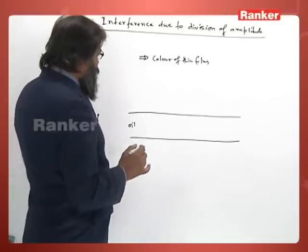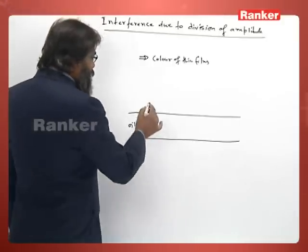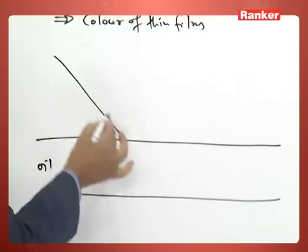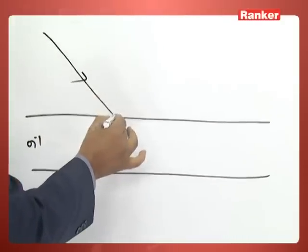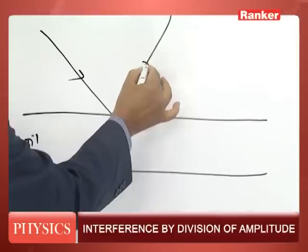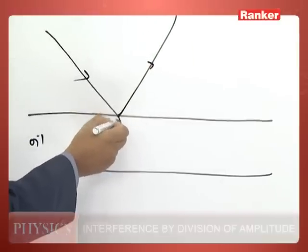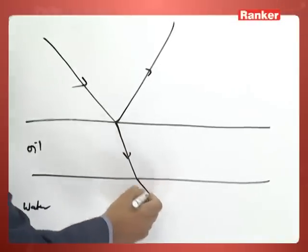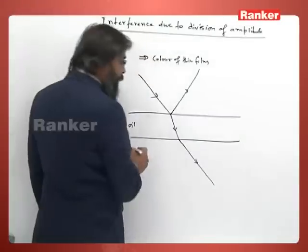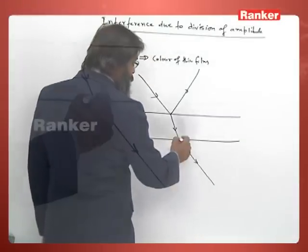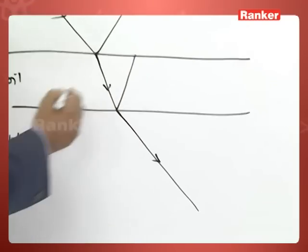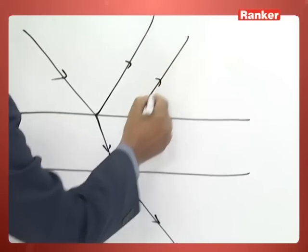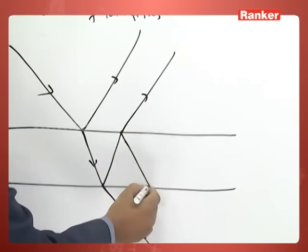What is generally done? The interference is studied. Suppose this is a ray, then it gets reflected from this upper end and some portion gets transmitted. Here again it gets reflected and here is again reflected. Again here there is some transmission and some reflection.